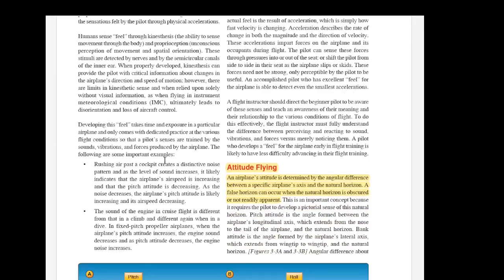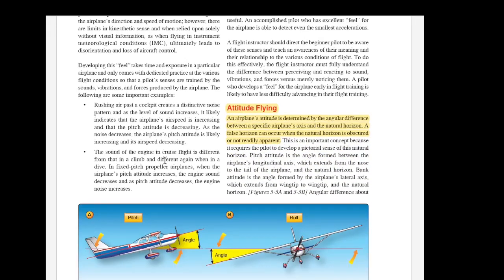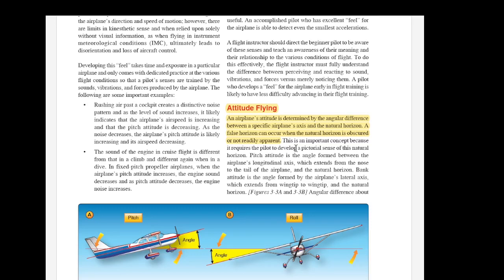So now it starts to talk about attitude flying and the importance of the horizon as a visual aid to the pilot. An airplane's attitude is determined by the angular difference between a specific airplane's axis and the natural horizon. A false horizon can occur when the natural horizon is obscured or not readily apparent.